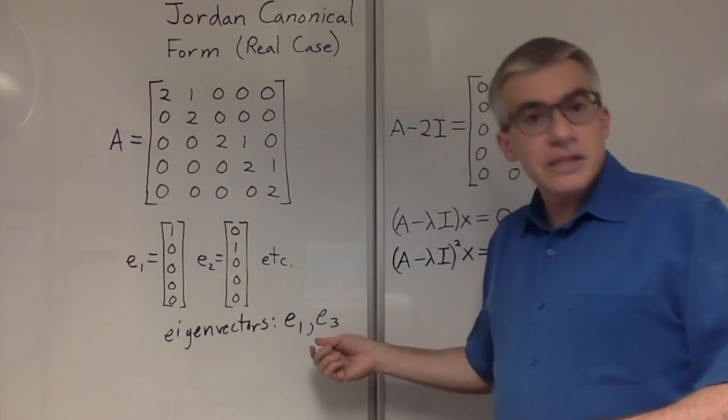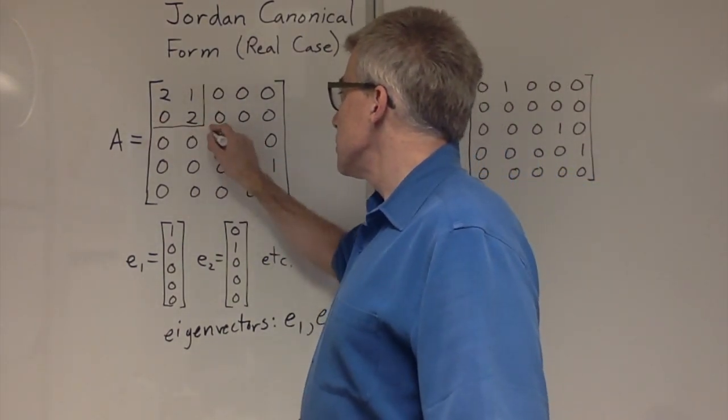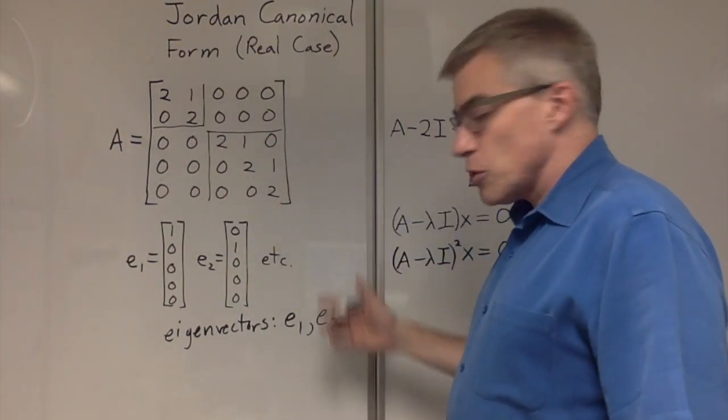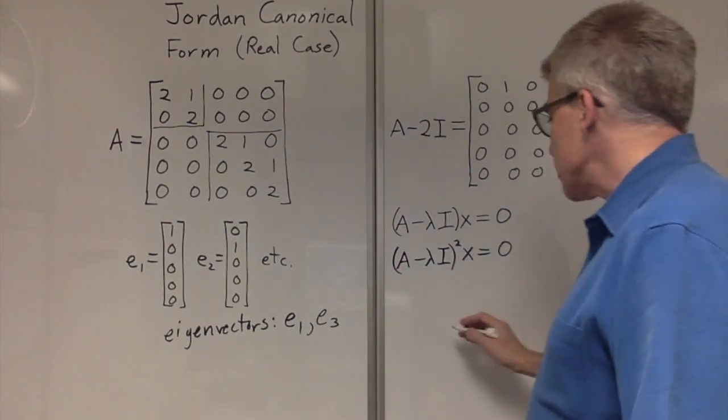So we're going to have two chains in this case, which correspond to having two Jordan blocks. Here and here. The way this is set up, it's already in Jordan form, so we can read it off. E2 is a generalized eigenvector.